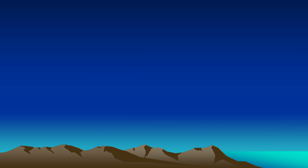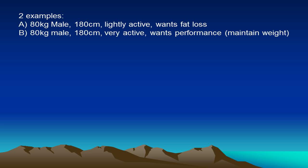What we're going to do today is look at the difference between two different people. Person A is an 80 kilogram man, 180 centimeters, who's lightly active and wants fat loss. Compare that to the topic of today's webinar: an 80 kilogram man, same weight, 180 centimeters, same height, who's very active — your typical athlete — who wants performance. That presumes weight maintenance; they're not after losing or gaining weight, they just want the best performance for their sport or activity.